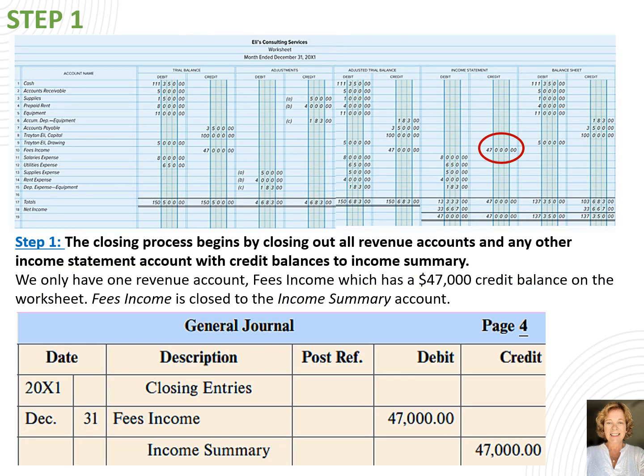Step 1 of the closing process involves closing out all revenue accounts and any other income statement accounts with credit balances to income summary. There's only one income statement account that is a revenue account and we don't have any other credit balances in our income statement. So let's close out the fees income account which has a credit balance of $47,000. We debit the account for $47,000. The account we need to credit is income summary.